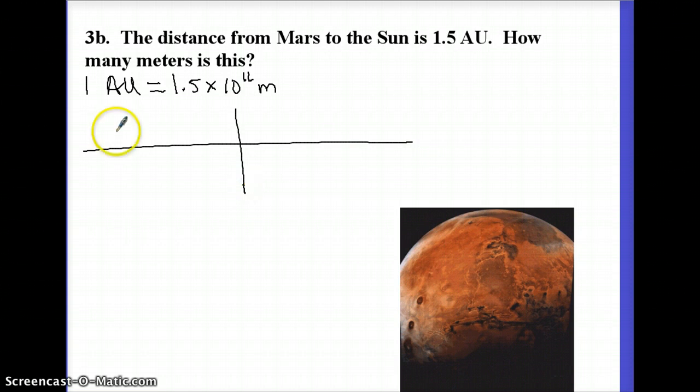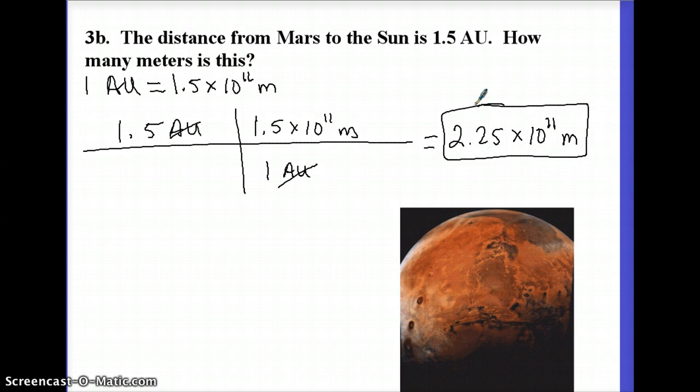So I can set up my dimensional analysis. I start with what I was given, 1.5 AU. And then this information I'm going to put over here with astronomical units on the bottom so they'll cancel with the astronomical units here. So one astronomical unit goes on the bottom, 1.5 times 10 to the 11 meters on the top. The astronomical units cancel and I'm left with meters. When you get your calculator and multiply that out, you get 2.25 times 10 to the 11 meters. Again, you may want to pause and think through it before you move on to the next example.